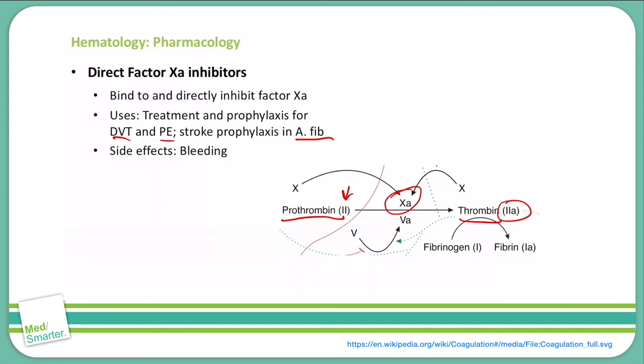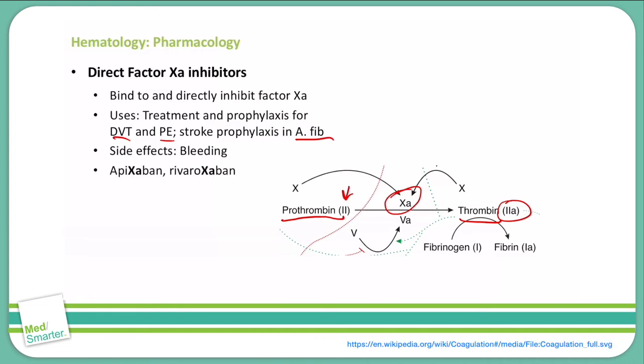The side effect of our Direct Factor XA inhibitors is going to be bleeding. We're inhibiting coagulation, so we can have bleeding. Two examples of our Direct Factor XA inhibitors are apixaban and rivaroxaban. You can see that they have 'XA' in their names, which is also associated with Direct Factor XA to help you remember these names.